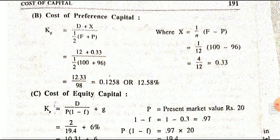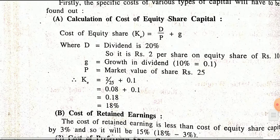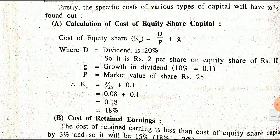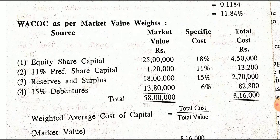Sum number 25 is a similar sum. You can calculate it — first calculate the extra information, then on the basis of that calculate book value weights and market value weights.